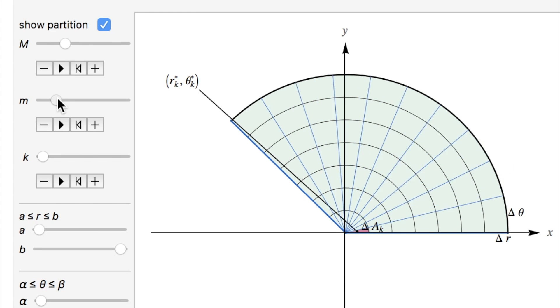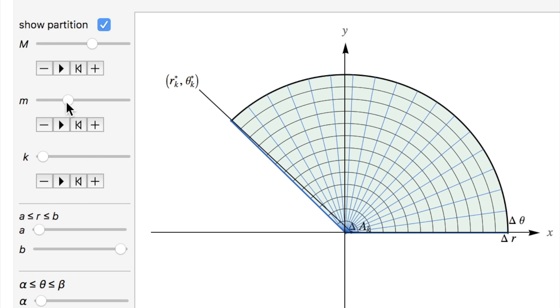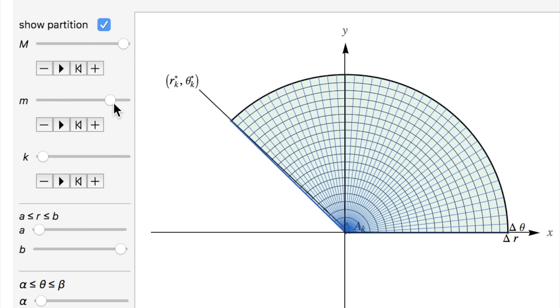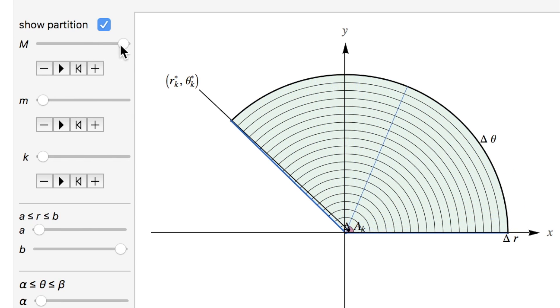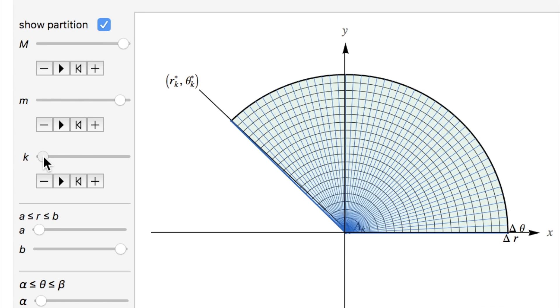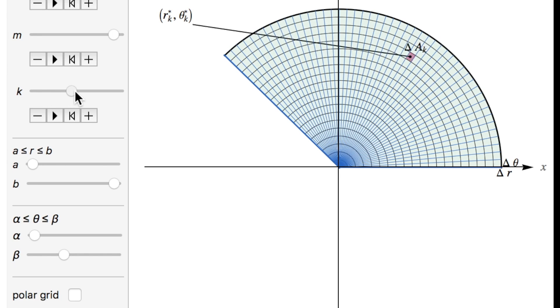As you can see from the visual, as the partitions of the polar graph become more and more small, our Δr and Δθ become more and more small, they actually become a better and better approximation of the area.